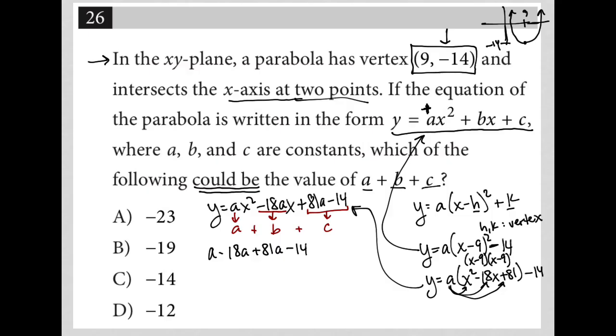When I simplify this, I get a - 18a, which is -17a. Negative 17a plus 81a is a positive 64a, so I have 64a - 14 as my answer. Now, we're going to use what we know about a.